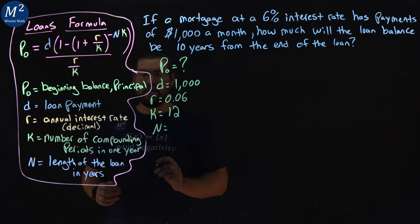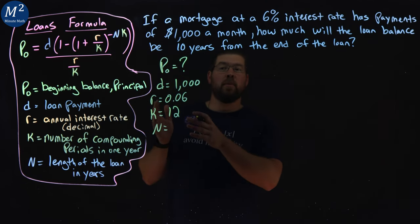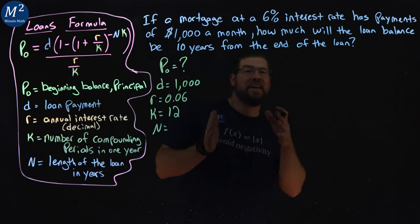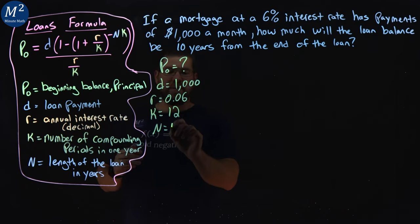And N is the length here of the loan. Again, this loan has existed, but we're counting at 10 years from the end of the loan, so it's going to be 10 years.